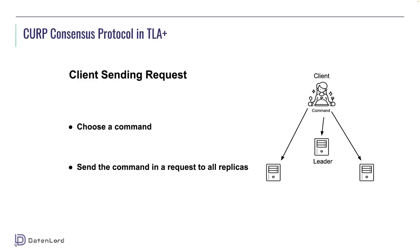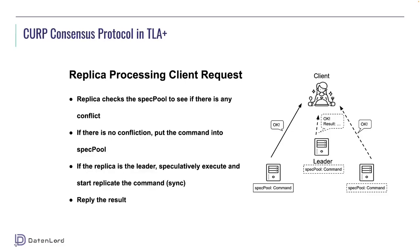Let's talk about these actions one by one. First is the client sending request action — we choose a command and send it to all replicas. Then is the replica receiving client request action. Since every replica has its own network and internal storage, we focus on processing one message on a single replica in one state. We check the spec pool for conflicting commands. If there's no conflict, we put the command into the spec pool. If this replica is the leader, it speculatively executes the command and starts replicating it. The replica also replies the result to the client.